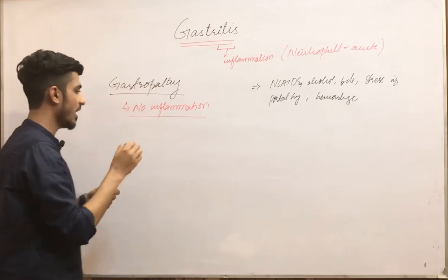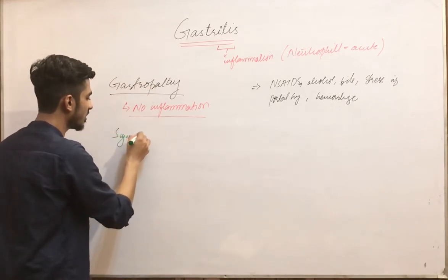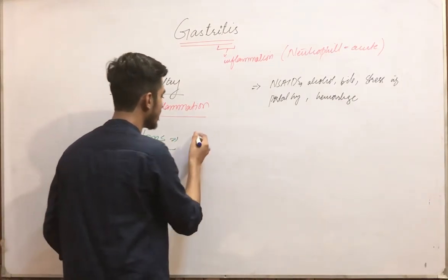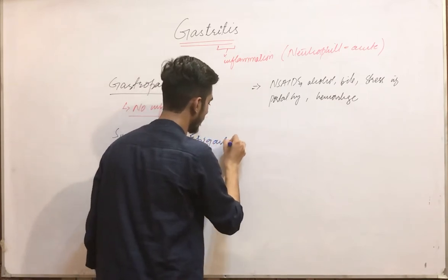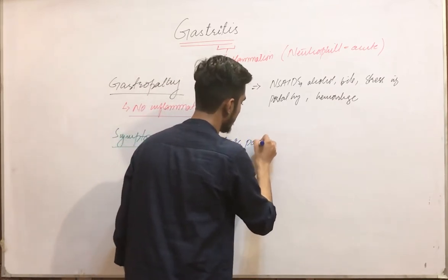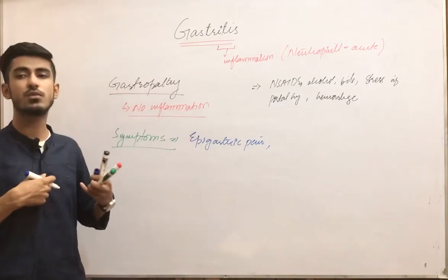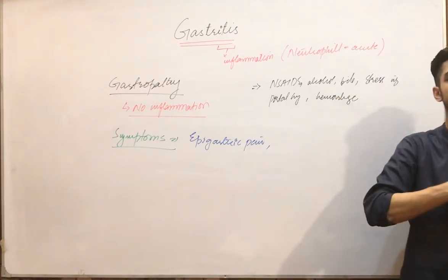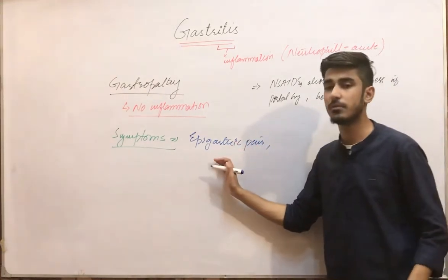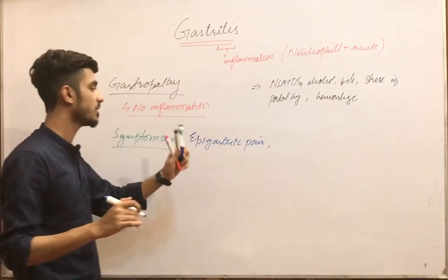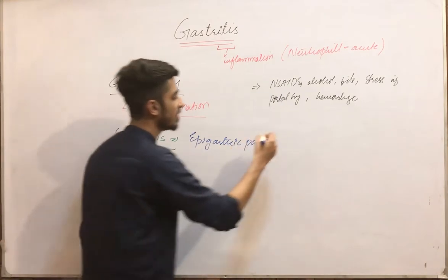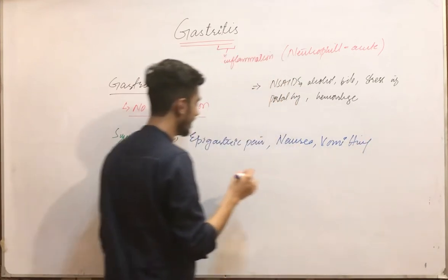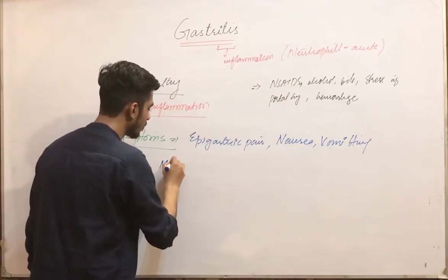These agents can result in gastritis or gastropathy. For both conditions, the clinical features are: first, epigastric pain — pain in the epigastric region, just below the ribs or sternum in the central region. Then we have nausea, vomiting, and mucosal erosion.